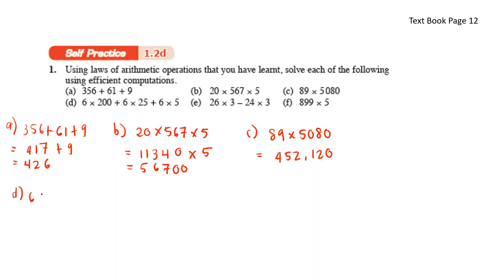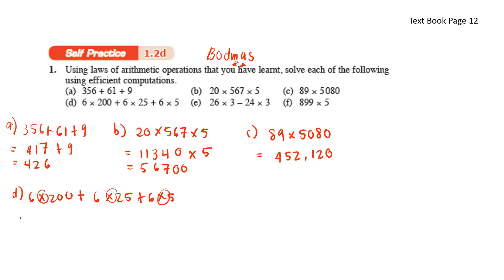6 times 200 plus 6 times 25 plus 6 times 5 — according to BODMAS, multiplication comes before addition. So: 6 times 200 is 1,200; plus 6 times 25 is 150; plus 6 times 5 is 30. 1,200 plus 150 plus 30 gives 1,380.